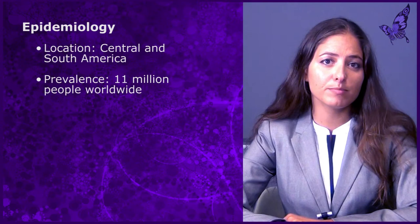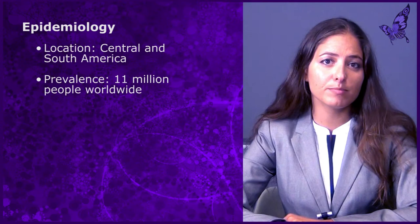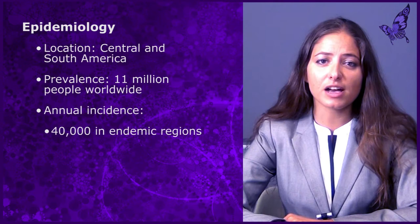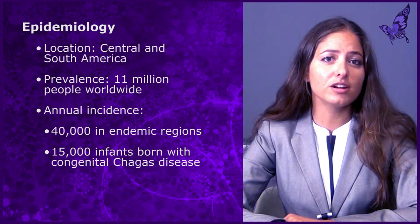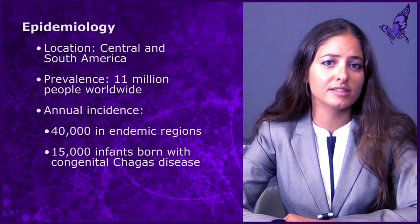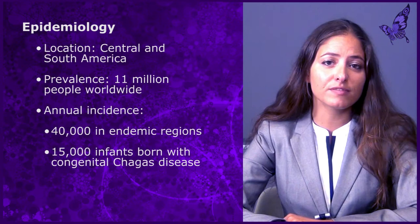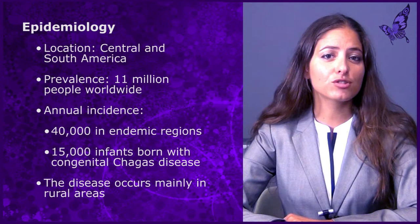It is estimated that 11 million people are infected with this parasite. Annually, there are roughly 40,000 new cases diagnosed in endemic countries and 15,000 infants born with congenital Chagas disease. Generally, congenital Chagas disease is asymptomatic, but may present with nonspecific signs and symptoms, namely anemia, hepatosplenomegaly, meningoencephalitis, or respiratory distress. Their rates of cardiac and gastrointestinal complications are similar to that of individuals infected later in life.